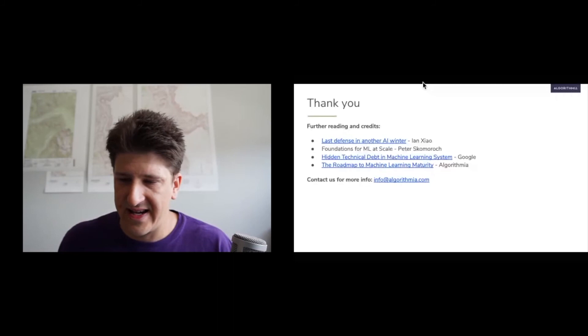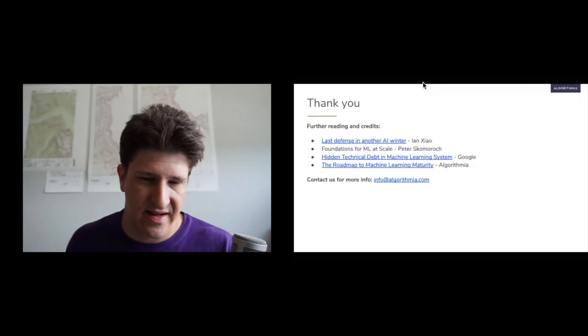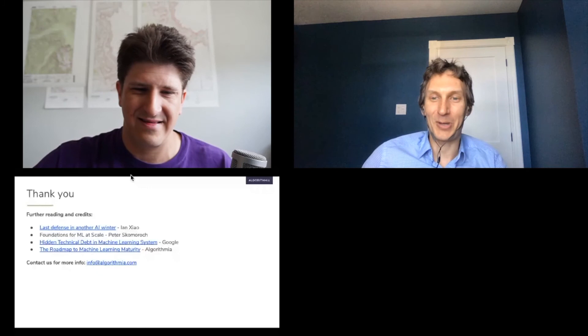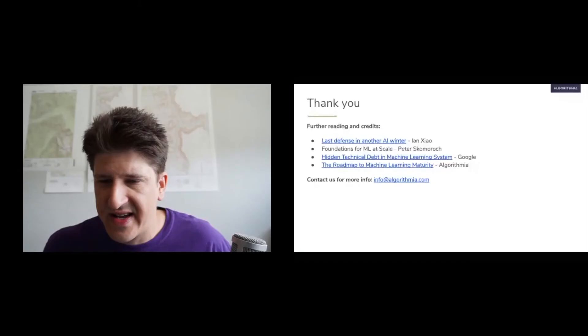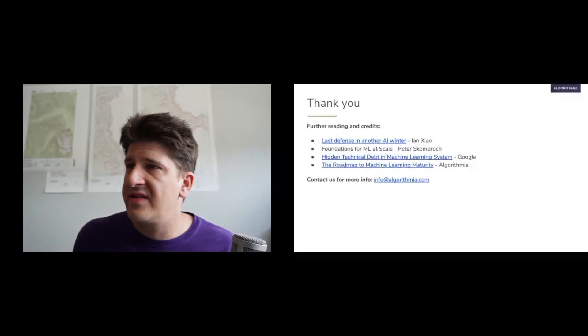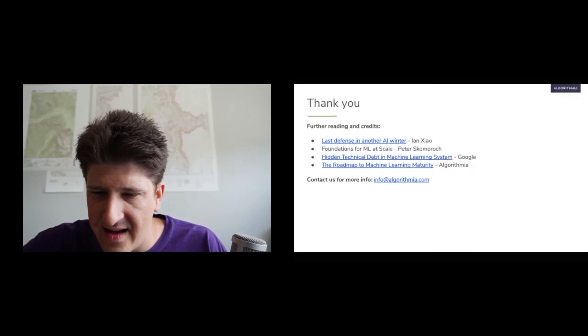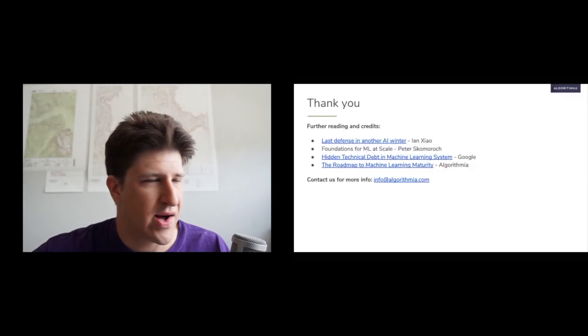Thanks everyone. There's some further reading here — Ian Chow really nails the existential risk to machine learning, Google has good talks about hidden technical debt, and the roadmap to machine learning maturity has good data backing up these points. The deck will be made available — I was making last-minute edits up till last night, but I'll absolutely make it available. Just email info at Algorithmia or Kenny at Algorithmia if you can't find it; it's all open information.